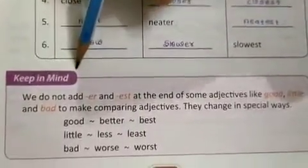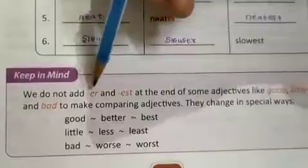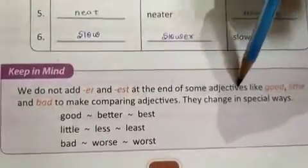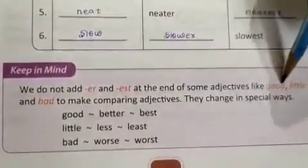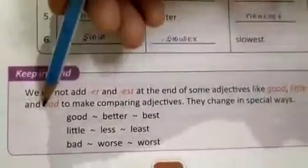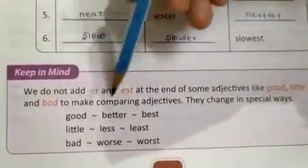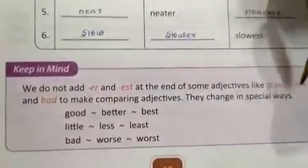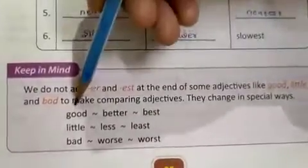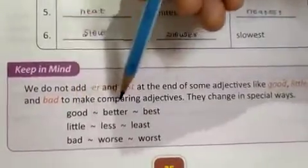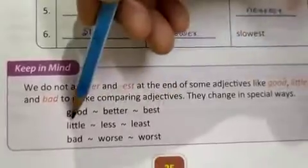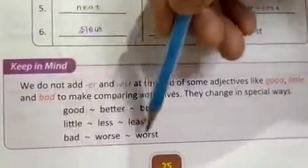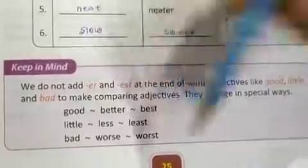Now keep in mind, we do not add ER and EST at the end of some adjectives like good, little, and bad. To make the comparing adjectives, they change in special ways. Good, better, best. Little, less, least. Bad, worse, worst. Thank you.